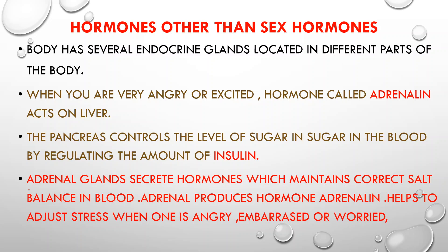The adrenal hormone is responsible for excitement and anger. Adrenal acts on the liver. The blood sugar level in the blood is regulated by the hormone known as insulin, which is secreted by the pancreas. Adrenal glands also secrete hormones that maintain the correct salt balance in the blood.